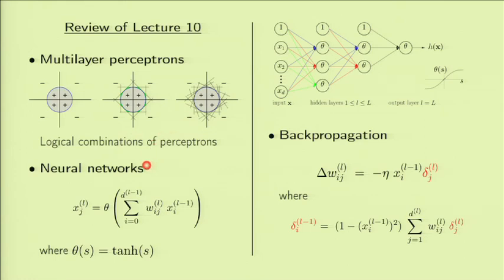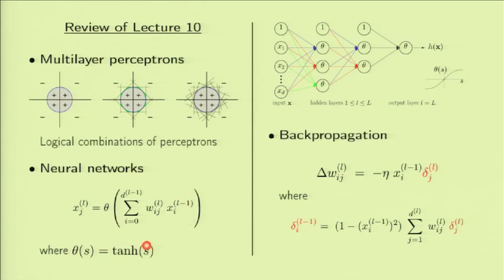We introduced neural networks as a way to have a nice algorithm for multi-layer perceptrons by softening the threshold—instead of jumping from minus 1 to plus 1 instantly, it goes from minus 1 to plus 1 gradually using a sigmoid function, in this case the tanh. When the signal is large negative or large positive, the tanh approximates minus 1 or plus 1, giving the decision function we want.